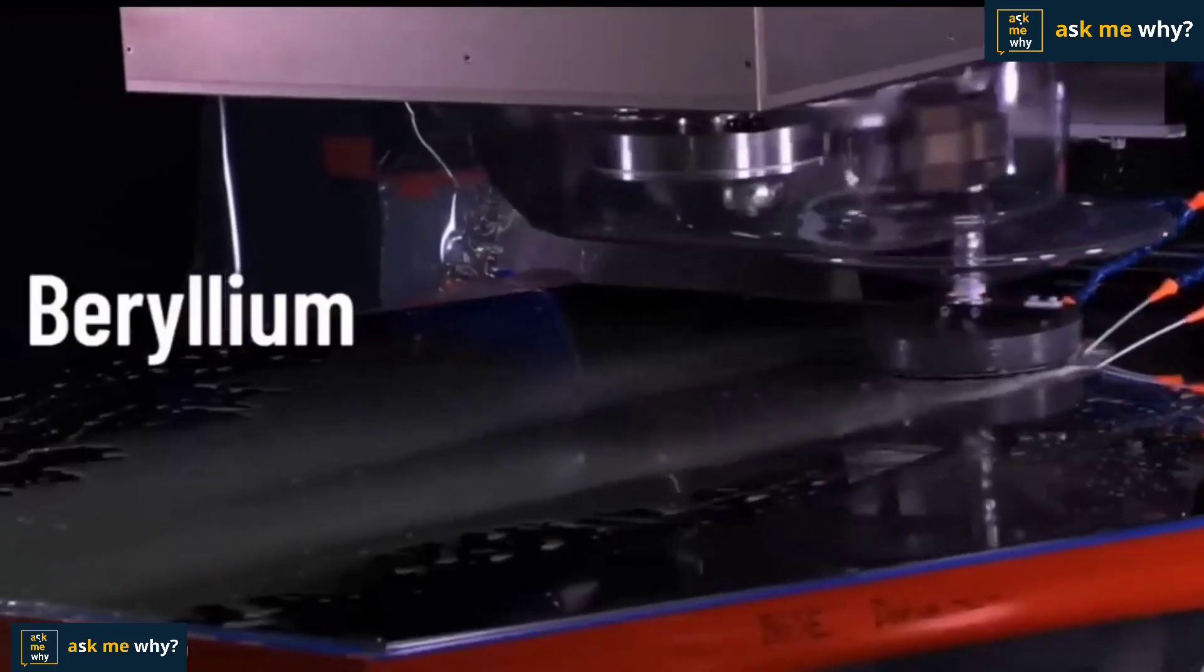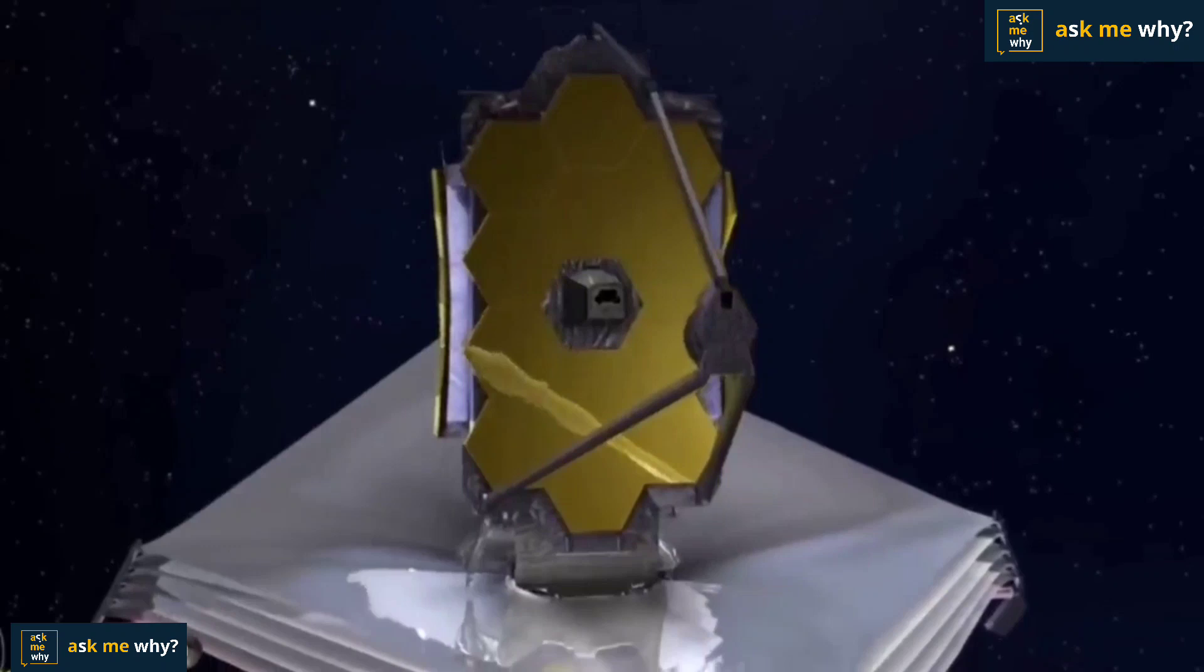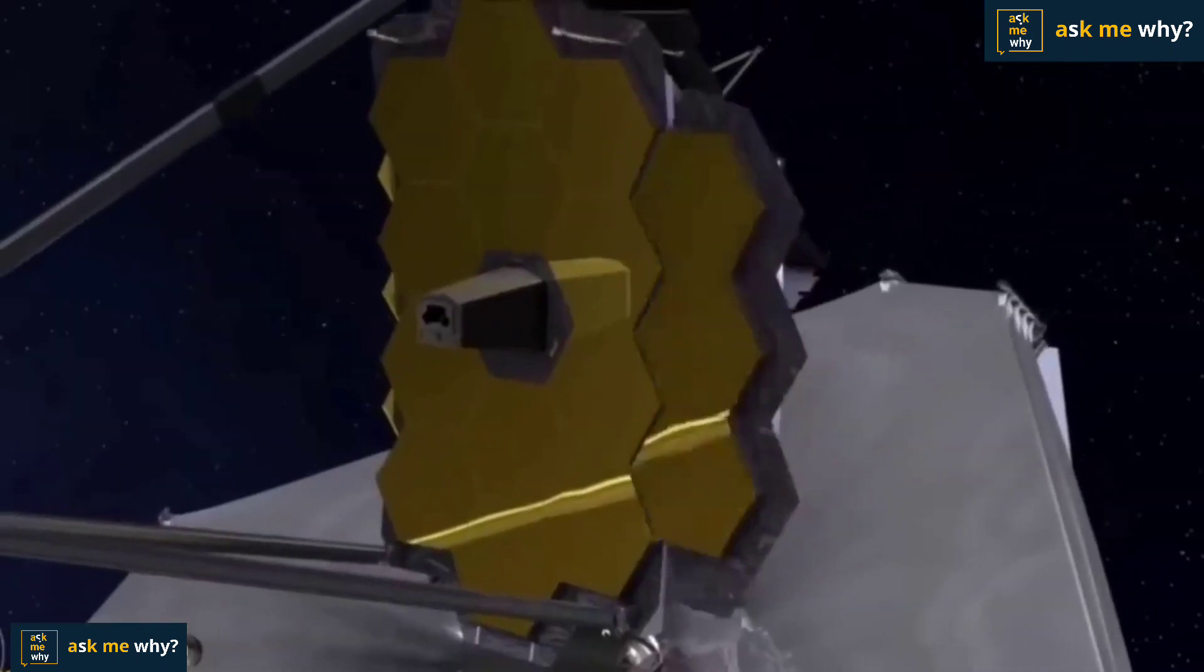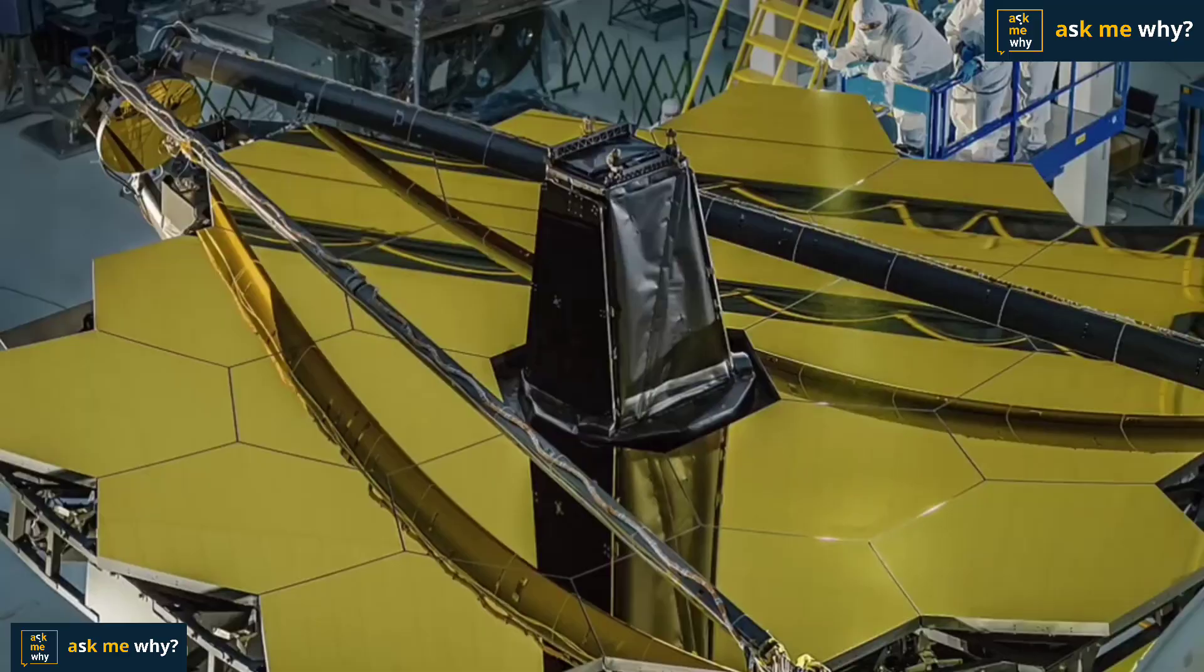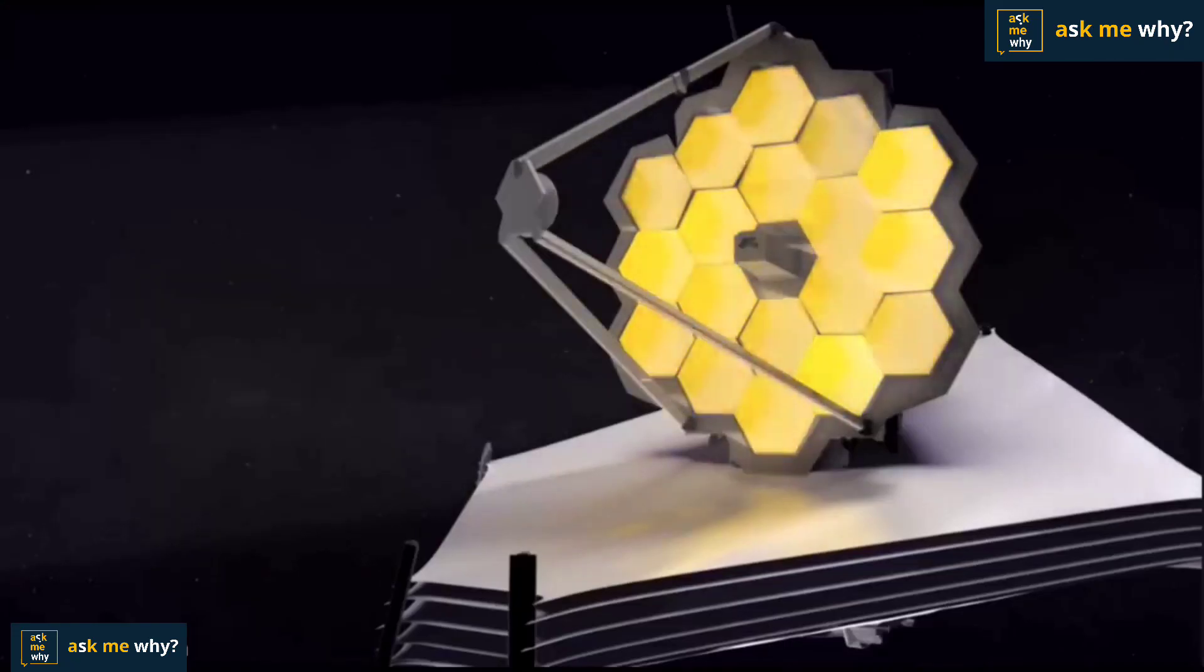It is made of a material called beryllium. It is high in strength and light in weight. Instead of one single big mirror, it has 18 hexagonal foldable segments. This mirror is coated with very thin layer of gold. Gold reflects infrared rays very well, so this mirror has been coated with gold.